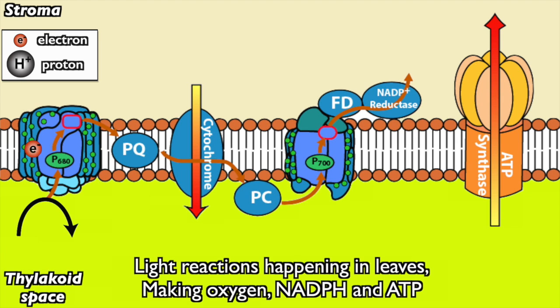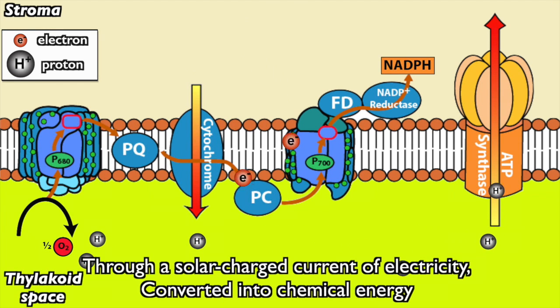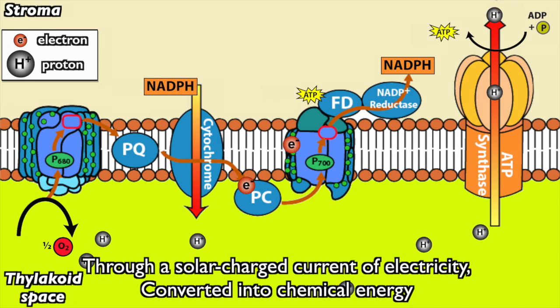Light reactions happening in leaves. Making oxygen, NADPH, and ATP. Through a solar charge current of electricity. Converted into chemical energy.